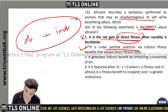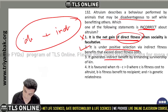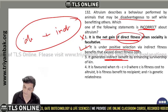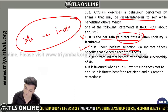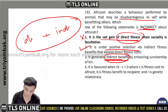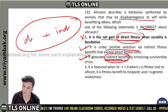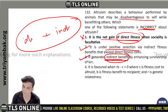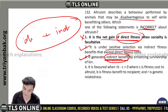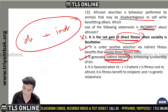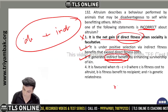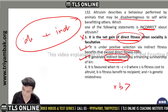Regarding fitness — unfit or fit — I mentioned that direct fitness increases survival. The condition stated is that rb is greater than c.